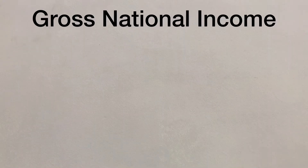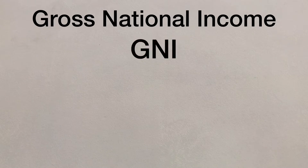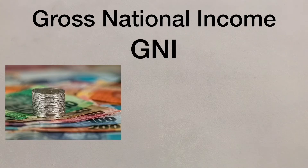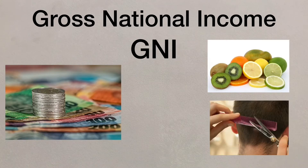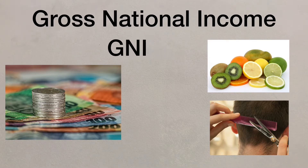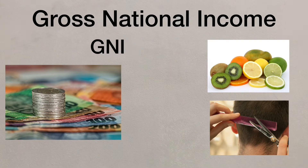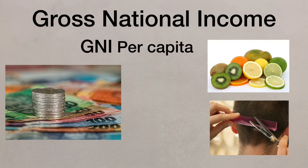The development gap indicates the difference between rich countries and poor countries. So what can we use to measure different aspects of development? The Gross National Income, or GNI, looks at the total value of goods and services produced by a country, along with money paid to or coming from other countries.